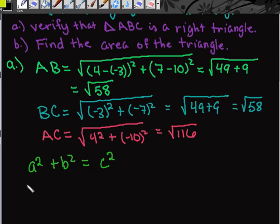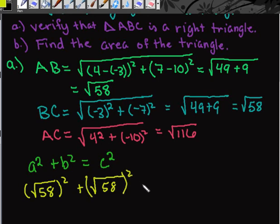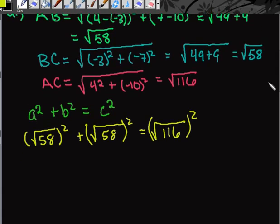So to plug in a², we would take (√58)² + (√58)² = (√116)². If I square a square root, I end up with what's inside. So we end up with 58 plus 58, which does give us 116.